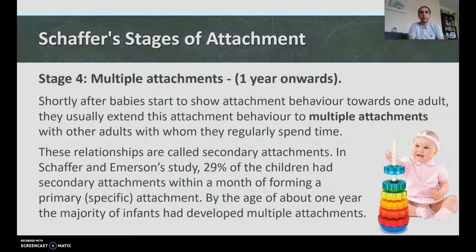Stage four is the multiple attachment stage, from one year onwards. Shortly after babies start to show attachment behavior towards one adult, they usually extend this to multiple attachments with other adults with whom they regularly spend time. These relationships are called secondary attachments. In Schaefer and Emerson's study, 29% of children had secondary attachments within a month of forming a primary attachment. By about one year, the majority of infants had developed multiple attachments — to the father, siblings, grandparents, and so on.